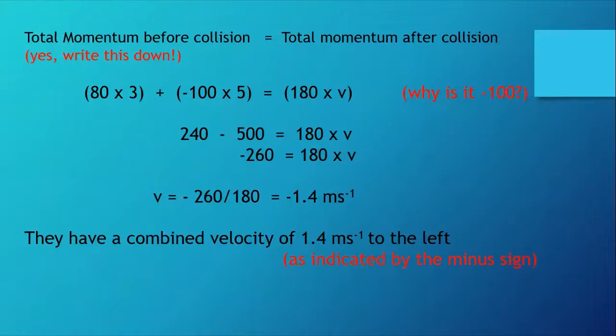If we're answering a question, let's write down the law of conservation of momentum. I've got 80 times 3, that's positive momentum going to the right, and I've got minus 100 times 5. Why is it minus 100? Because of course this player is going from right to left, so this player has a negative velocity and a negative momentum. That equals 180 times v. Just look at the maths and v works out to be minus 1.4 meters per second.